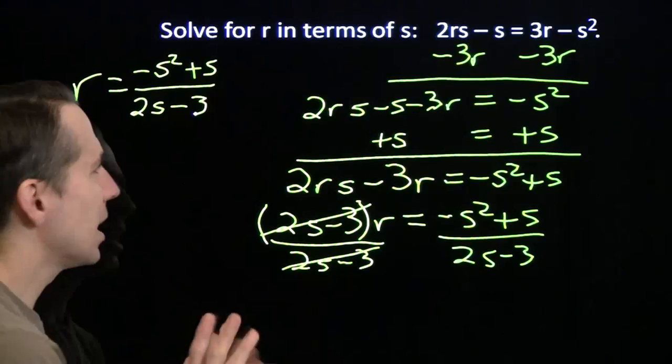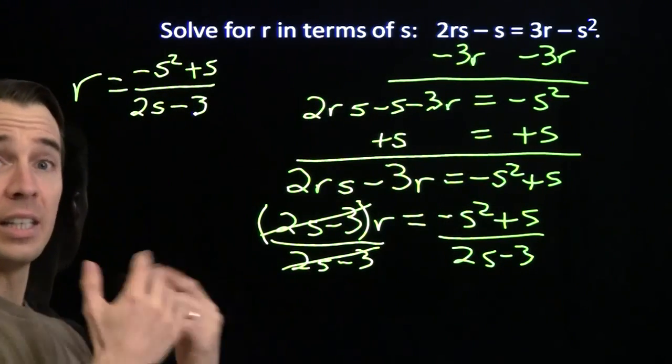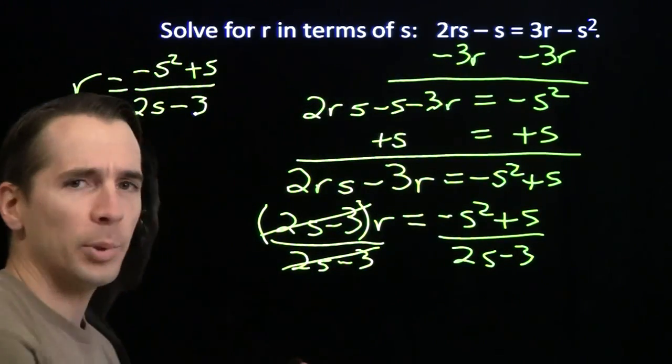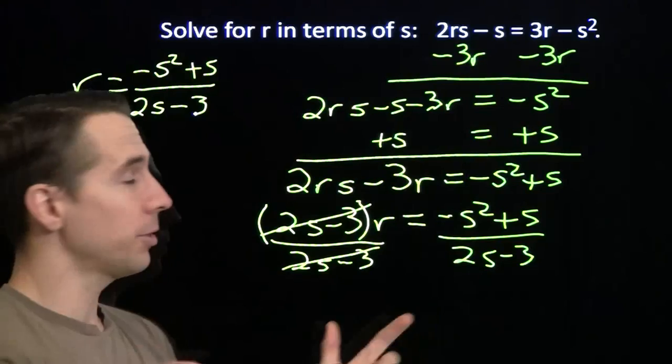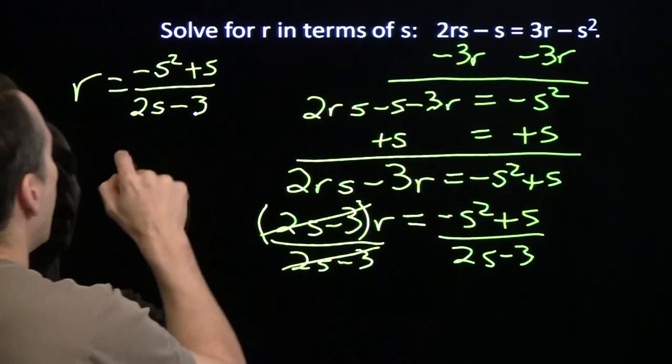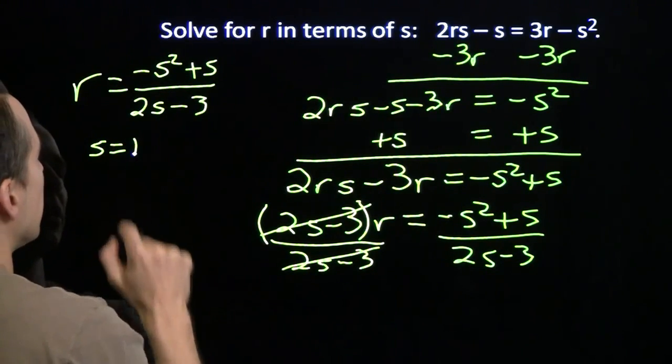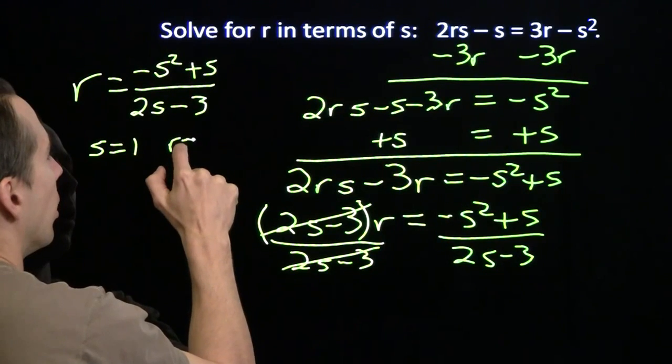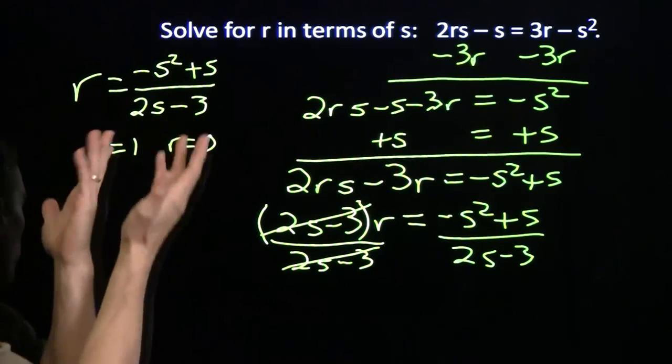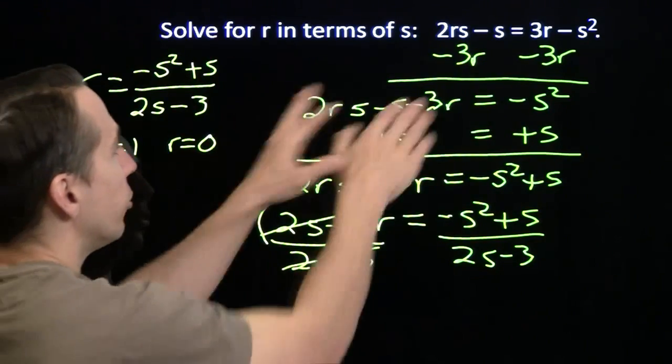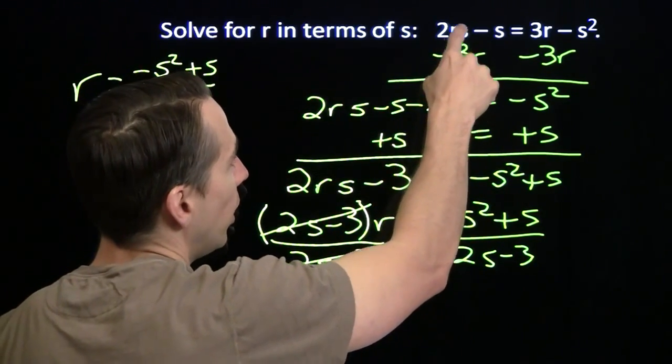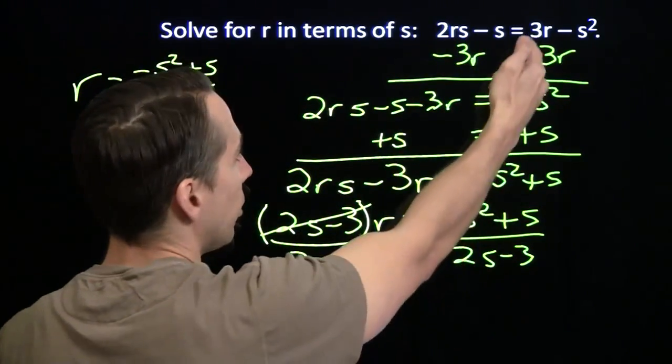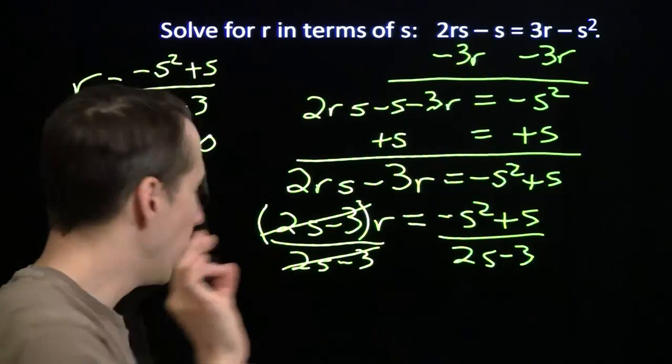You know, I want to test this. I'm going to test this a couple times. I'm going to stick a value of s in, get a value of r, and make sure that r and s works over here. Because there's a lot of complicated stuff, stuff that looks a little new, but really there's nothing new here. But it looks a little new, so I want to make sure I did the right thing. Let's see what happens if I put in s equals 1. If I put s equals 1 in here, if I have minus 1 plus 1 on the top, I'm going to get 0. r equals 0. It doesn't matter what's on the bottom as long as it's not 0. 2 minus 3 is negative 1. s equals 1, r equals 0. Let's test that over here. If I put r equals 0 and s equals 1, this becomes 0. That becomes minus 1, so you get minus 1 on the left. Over here on the right, 3 times 0 is 0, minus 1, minus 1. That works.